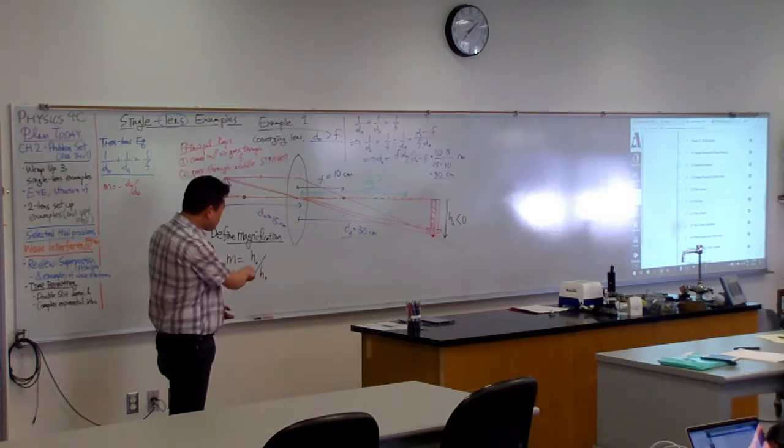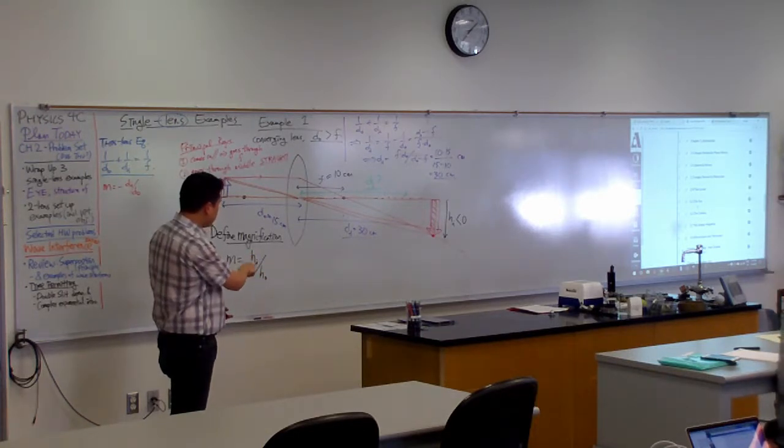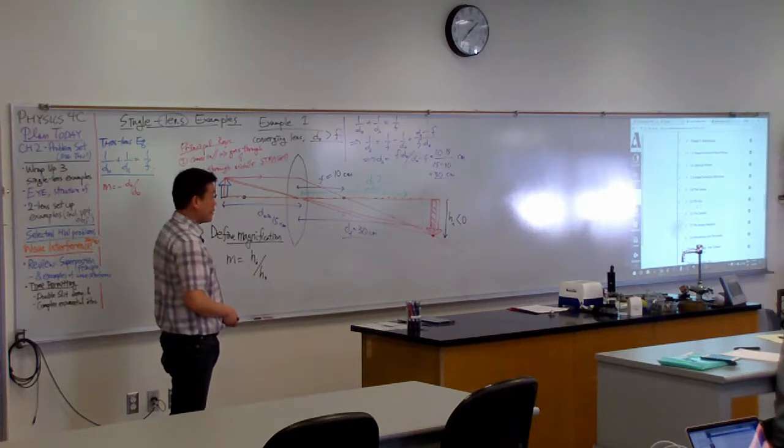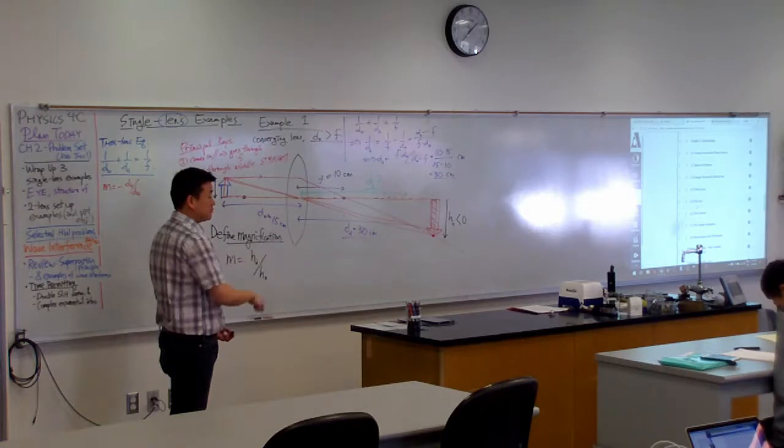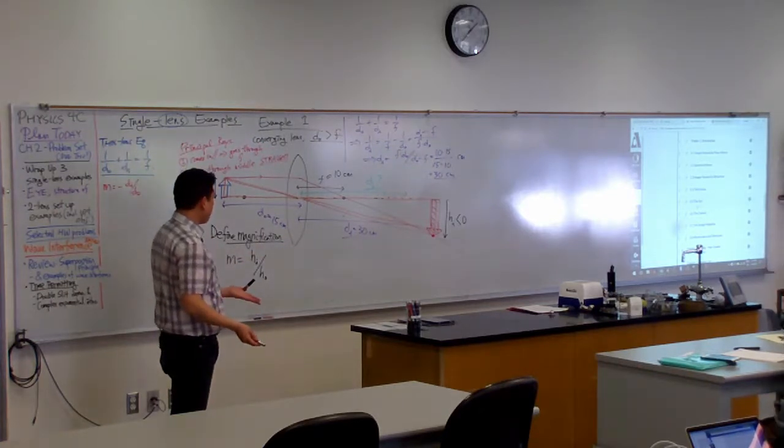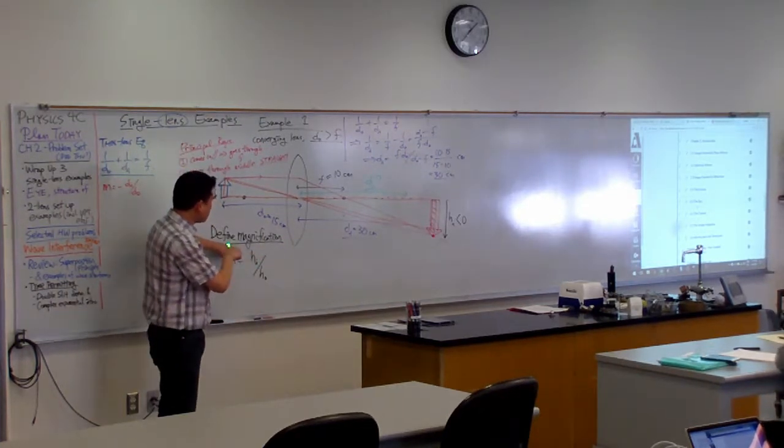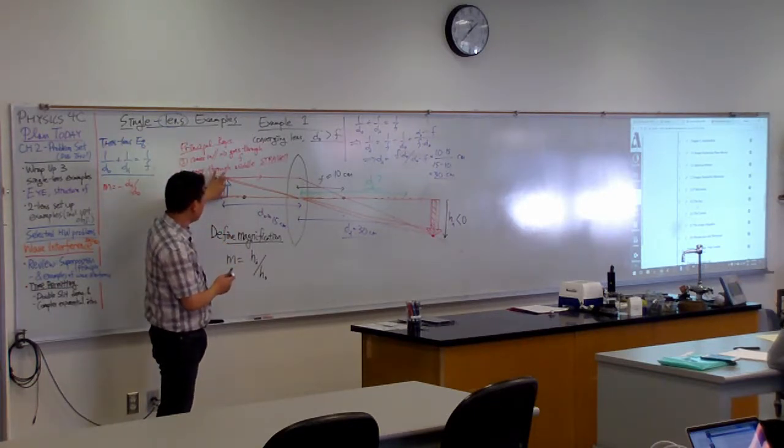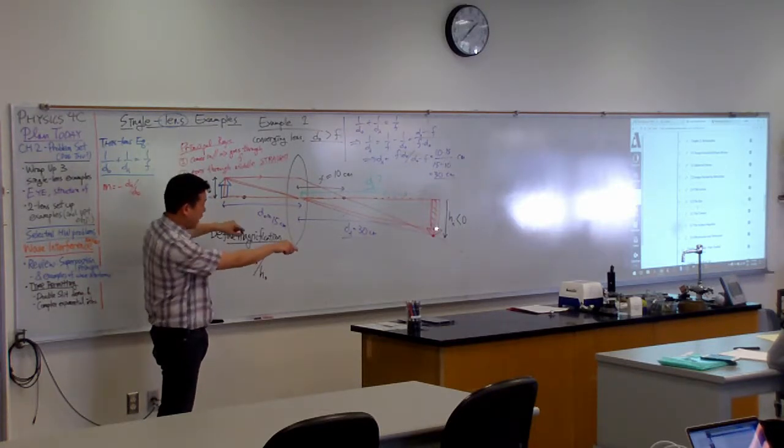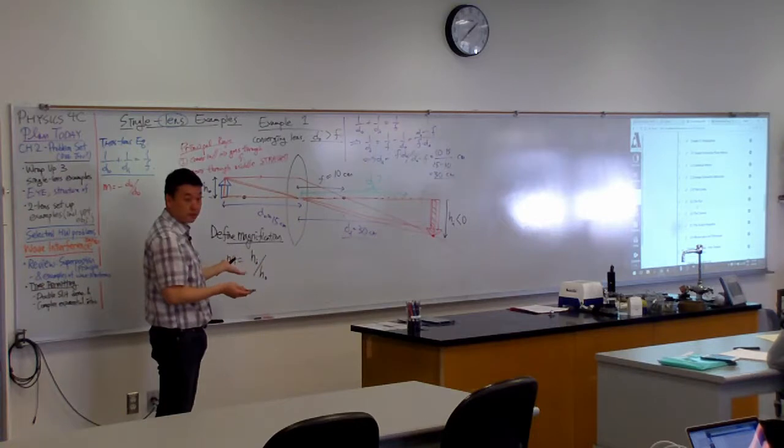But this will be very inconvenient definition to use. Because then you will have to know the size of the object, you will have to know the size of the image. And do you feel like this magnification should depend on the size of the object? Like if I used half as tall of an arrow, would my magnification still be the same? Right? Yeah. The image will be half as tall, so that magnification will be the same, right?